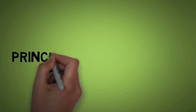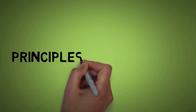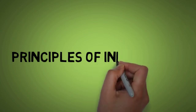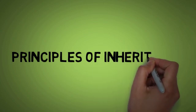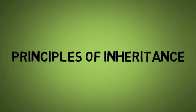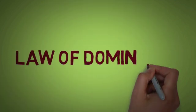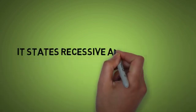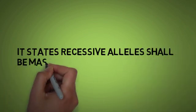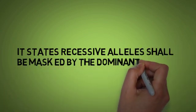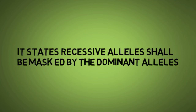We are going to learn the principles of inheritance, popularly known as Mendel's laws of inheritance. First one is the law of dominance. It states recessive alleles shall be masked by the dominant alleles. In simple terms, if we cross between two pure pairs of contrasting traits, the F1 generation is called dominant and the one which is suppressed is called recessive.